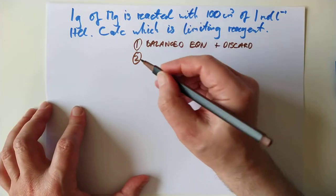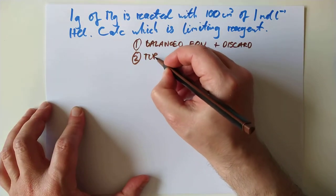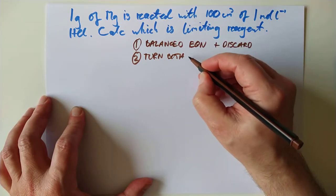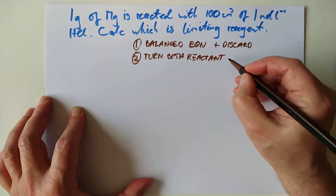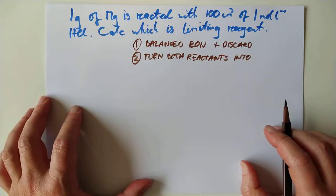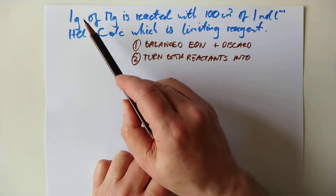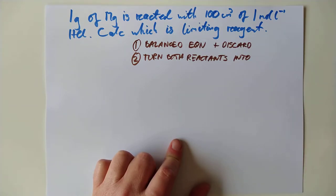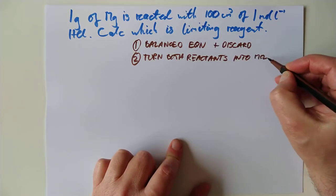The second stage of this process is we are going to turn both reactants into moles. I don't do this very often in my mole calculations because I usually use proportion. But because you're dealing with two very different types of data, it's easier — in fact it's the only way to do a direct comparison: to turn both your reactants into a number of moles.